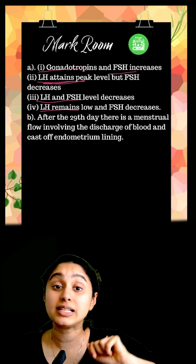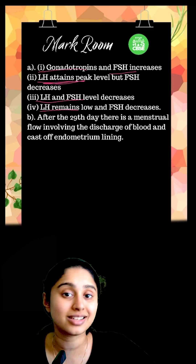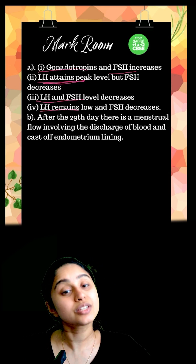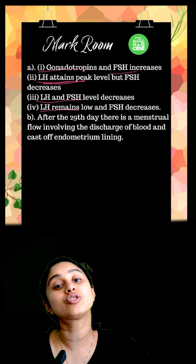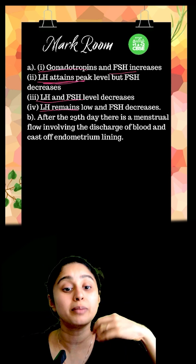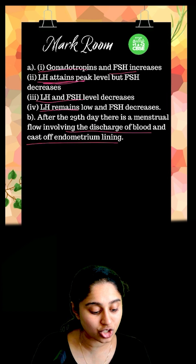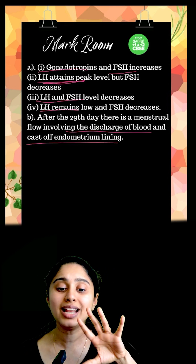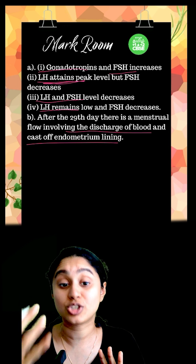The second part asks what will happen after the 29th day if there is no fertilization. At day 29, if there is no fertilization, the cycle goes back to square one and starts fresh, causing menstrual bleeding — a discharge of blood and the casting off of the endometrial lining.